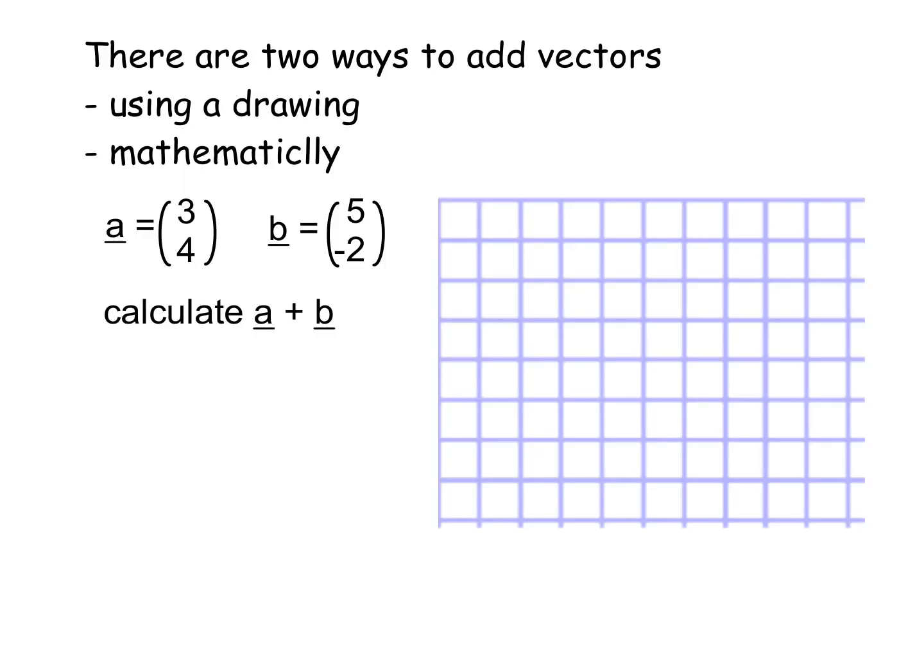So there are two ways to add vectors, as I've said, we can do it drawing or we can do it mathematically. So I've got a question here and you'll notice I've got two vectors, A and B, written out in component form, but I also have it ready to go using a picture at the side here.